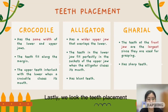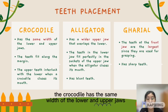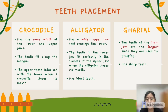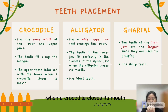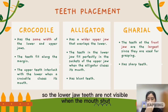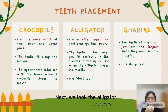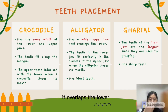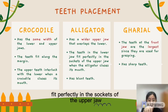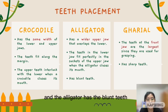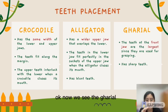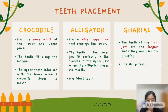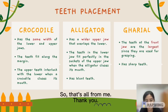Lastly, we look at teeth placement. The crocodile has the same width upper and lower jaws, with teeth fitting along the margin. The upper teeth interlock with the lower when the mouth is closed, so the lower jaw teeth are not visible when the mouth shuts. The alligator has a wider upper jaw that overlaps the lower, so the lower teeth fit into sockets of the upper jaw when closed. Alligators have blunt teeth. For the gharial, the front jaw teeth are the largest, used for grasping prey especially fish, and the gharial has sharp teeth. Thank you.